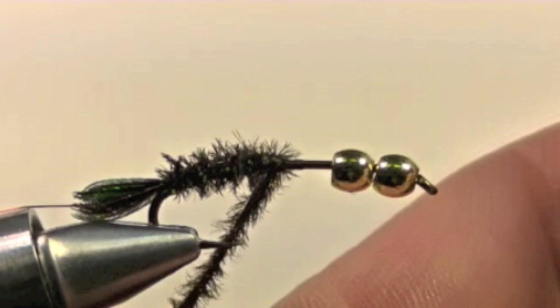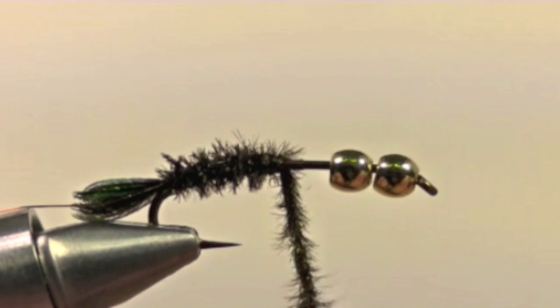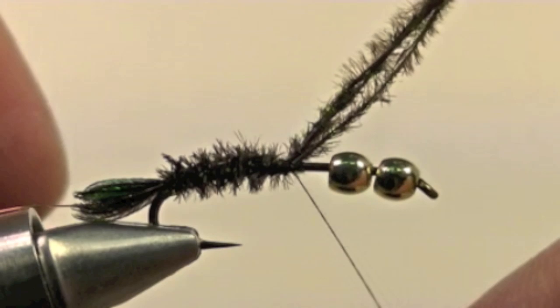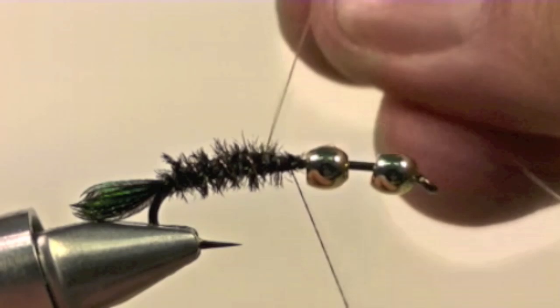Untwist the strands of peacock hurl. This will allow us to properly tie them down. Once secure, clip off the excess and then we wrap our wire. Tie off the wire and clip off the excess wire.